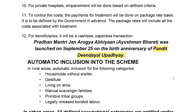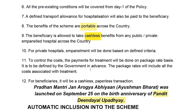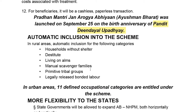Pradhan Mantri Jan Aarogya Abhiyan was launched on September 25th to commemorate the birth anniversary of Pandit Deen Dayal Upadhyaya. The 8.03 crore people from rural areas and 2.33 crore from urban areas covered under this scheme are identified by specific categories. In rural areas, certain occupations and conditions are automatically included — such as households without shelter and primitive tribal groups. In urban areas, there are 11 defined occupational categories that determine entitlement under the scheme.